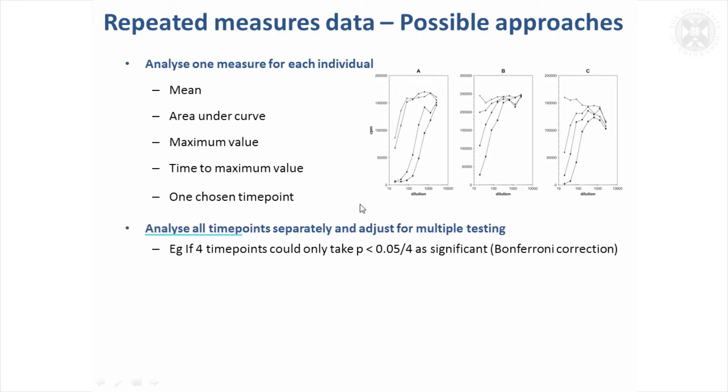Sometimes people would just take all time points separately and adjust for multiple testing. That can get confusing if you've got a significant result at one time point, the next one's not significant, and then the next one after that is significant.